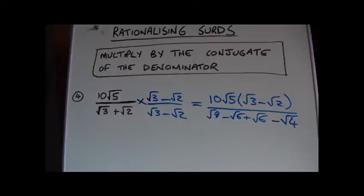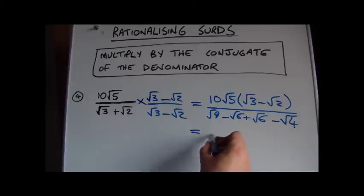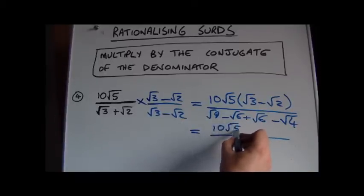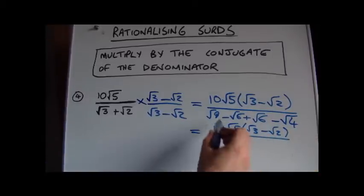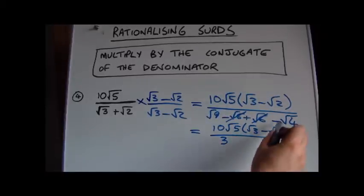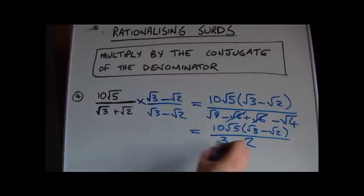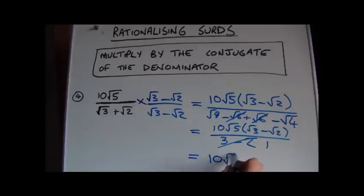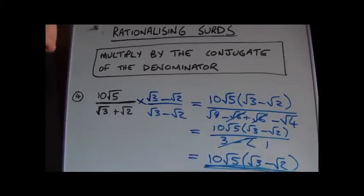On the bottom, the minus root 6 and plus root 6 cancel. We're left with root 9 minus root 4, which is 3 minus 2, equalling 1. So the denominator simplifies to 1, and the final answer is just 10 root 5 times (root 3 minus root 2). There's no need to expand the brackets further — the important point is that we've removed the surds from the bottom of the fraction.